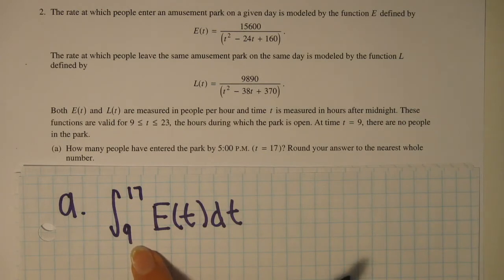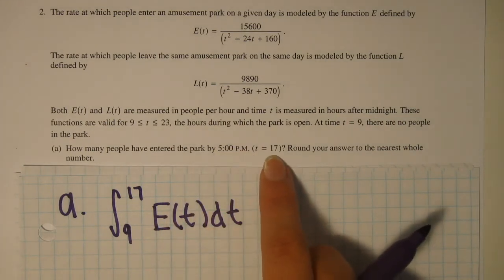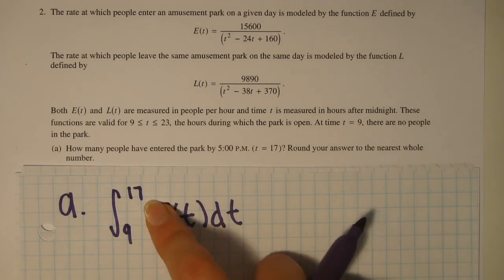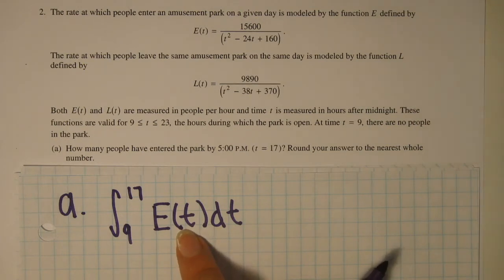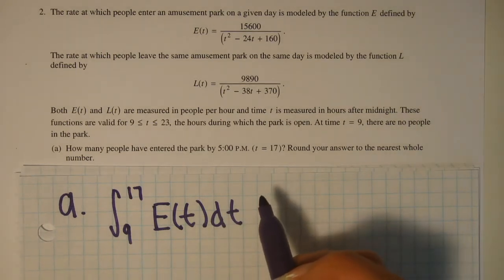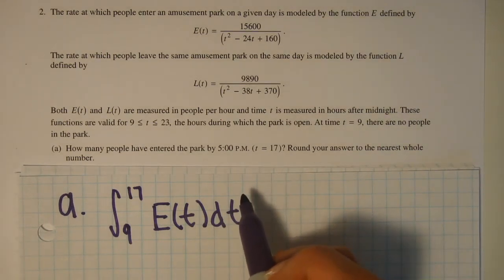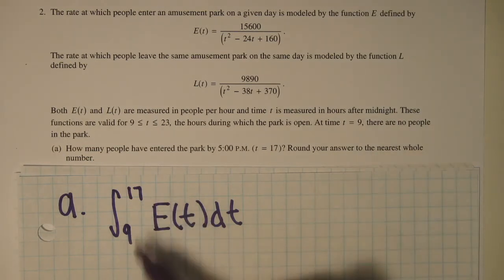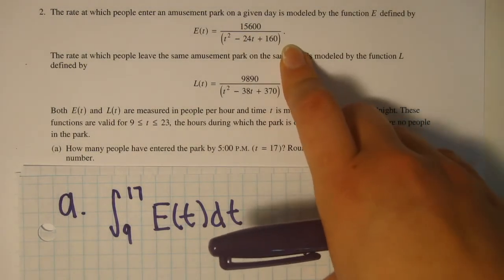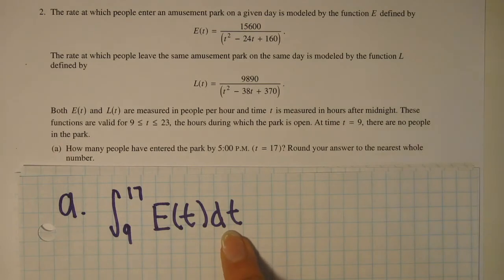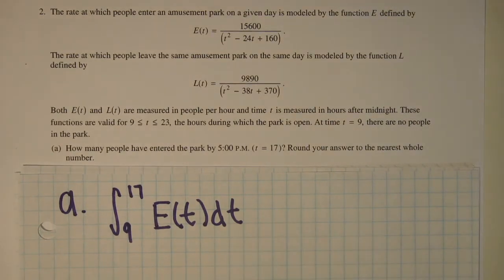So our starting limit will be 9 and it asks how many people have entered by t equals 17. So our ending limit should be 17. Also we know to use E(t) dt because E(t) is the rate at which people enter the amusement park and we're setting up the integral so that we can find how many people enter. For this question you get 1 point for having the correct limits and 1 point for having the correct integral. Also you do not need to copy this entire problem down since this is on the calculator section. And don't forget dt, this is very important. So now I will show you how to solve this on your calculator.